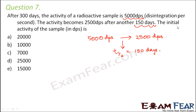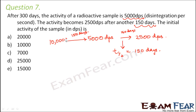We have to find the initial activity of the sample. The initial time was 300 days before 5000 disintegrations per second. Since 150 days is the half-life, 150 days before 5000 the activity would have been double — 10,000 disintegrations per second. So we are backtracing: 150 days before the 5000 mark gives us 10,000.